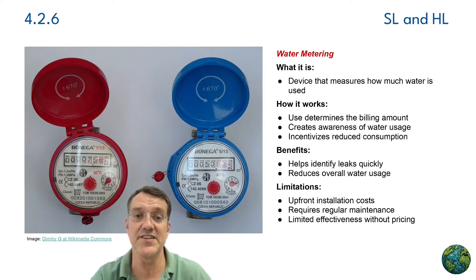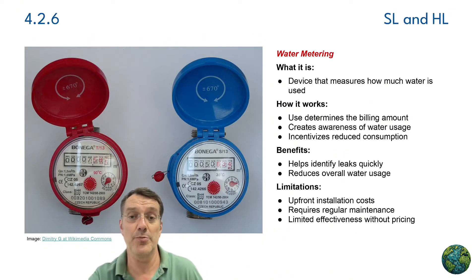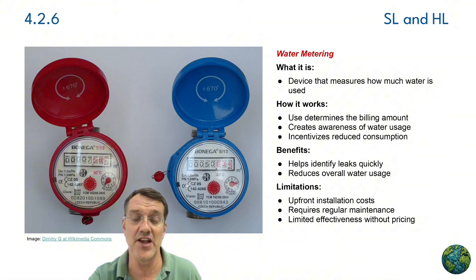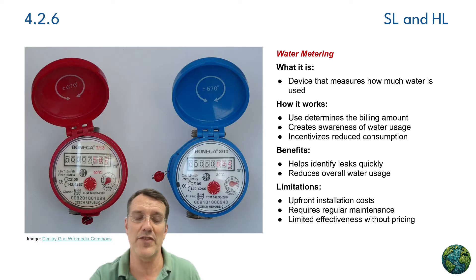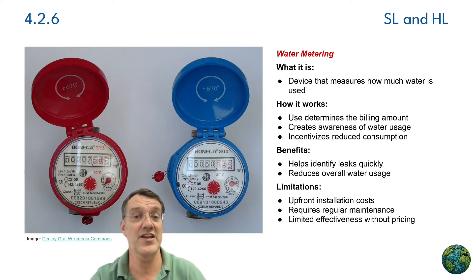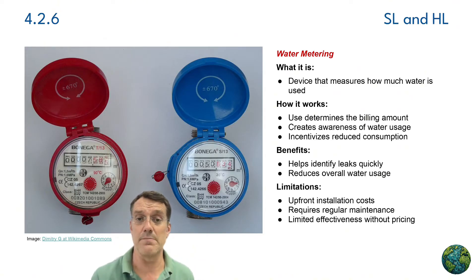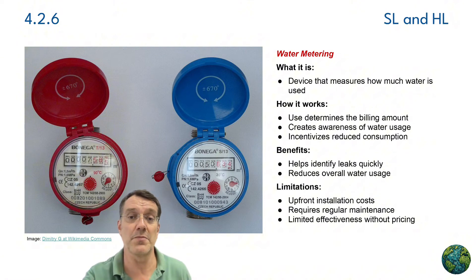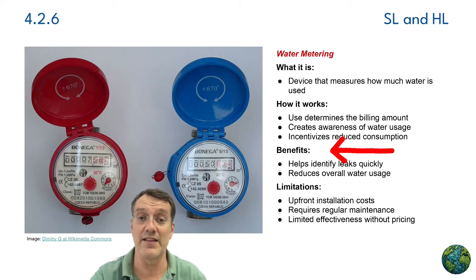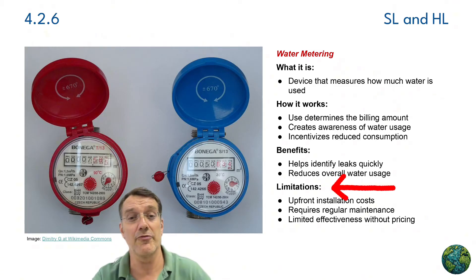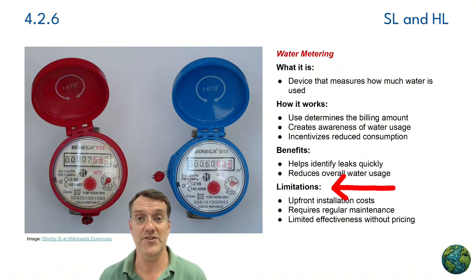Water metering involves installing devices that measure household water consumption, helping create awareness and financial incentives for conservation. It works by basing billing on actual usage rather than flat rates, making consumers aware of their consumption patterns and incentivizing reduced use. Studies show that metered households typically reduce water consumption by between 15 and 30 percent compared to households without meters. Benefits include quickly identifying leaks and reducing overall water usage. Limitations include upfront installation costs, regular maintenance requirements, and limited effectiveness without appropriate pricing structures.